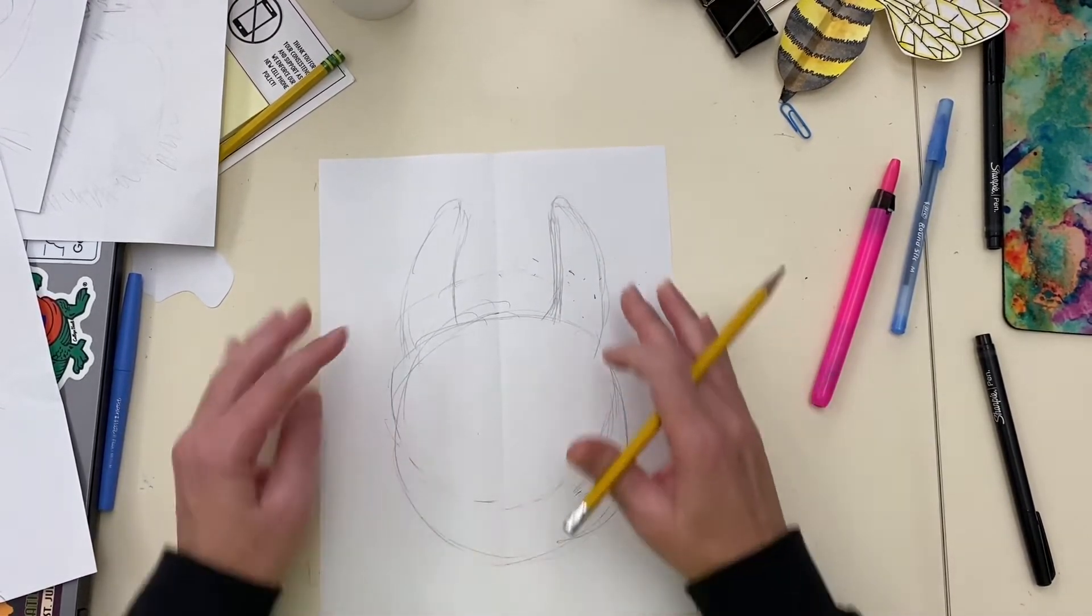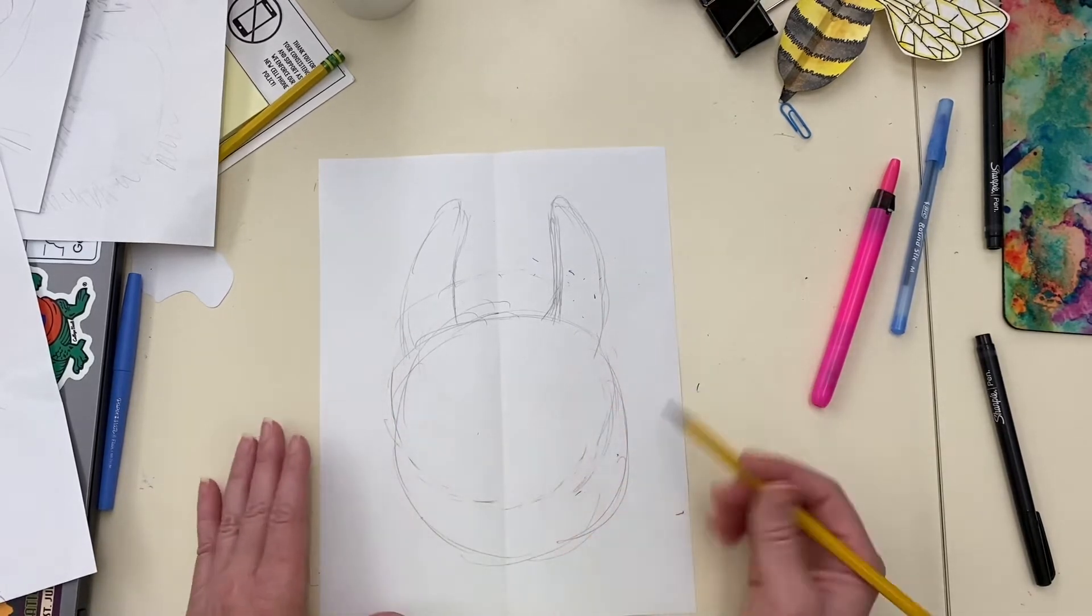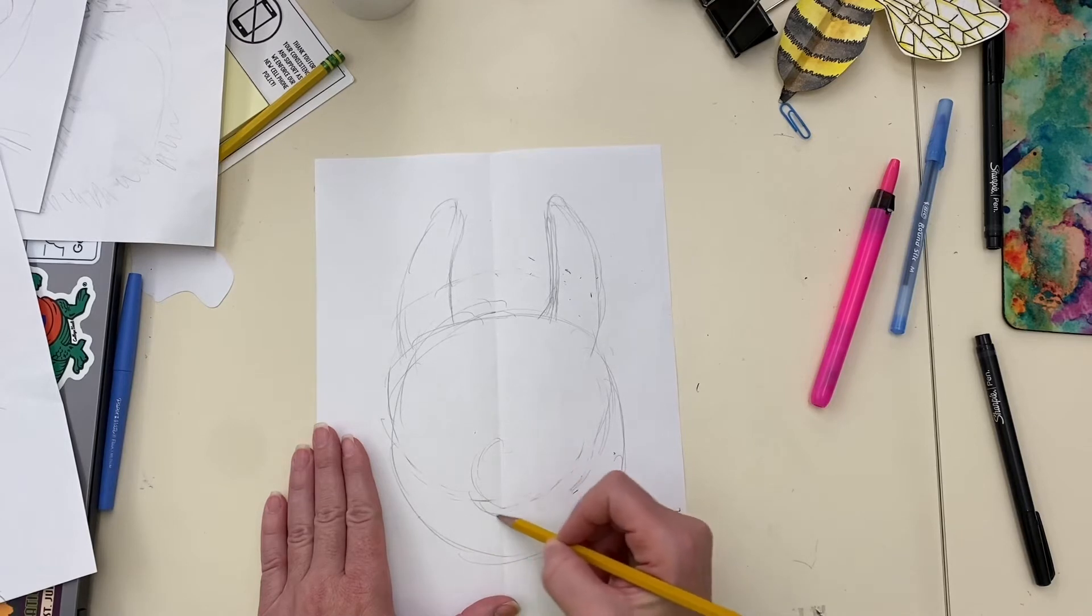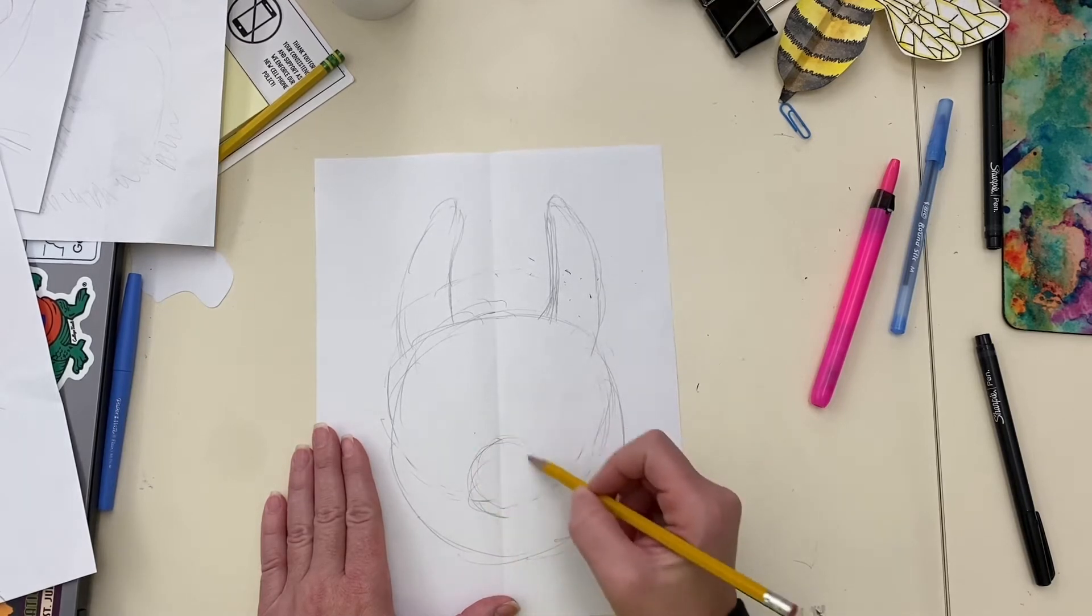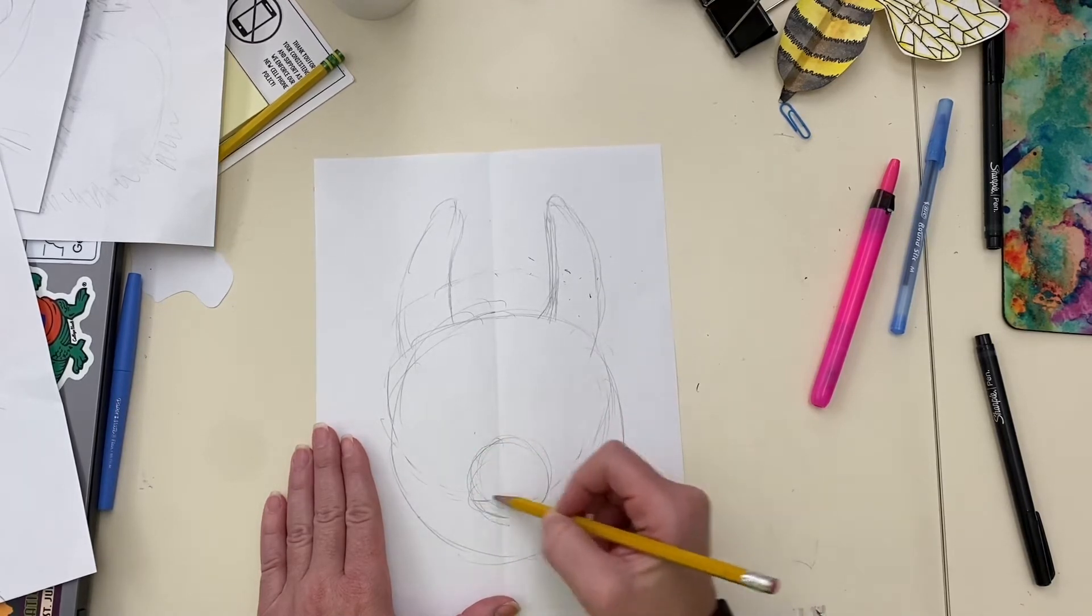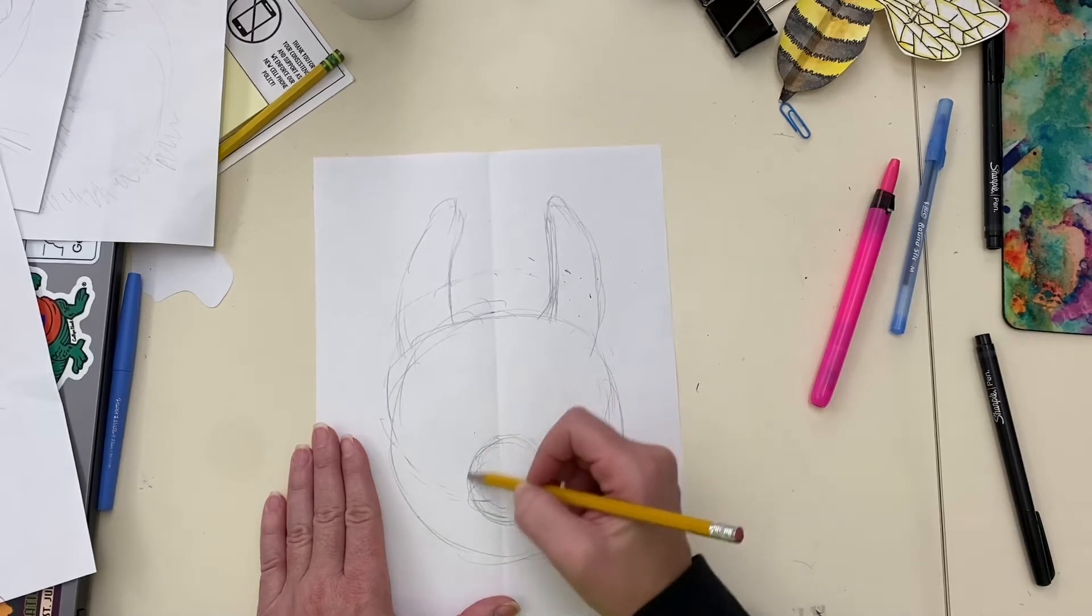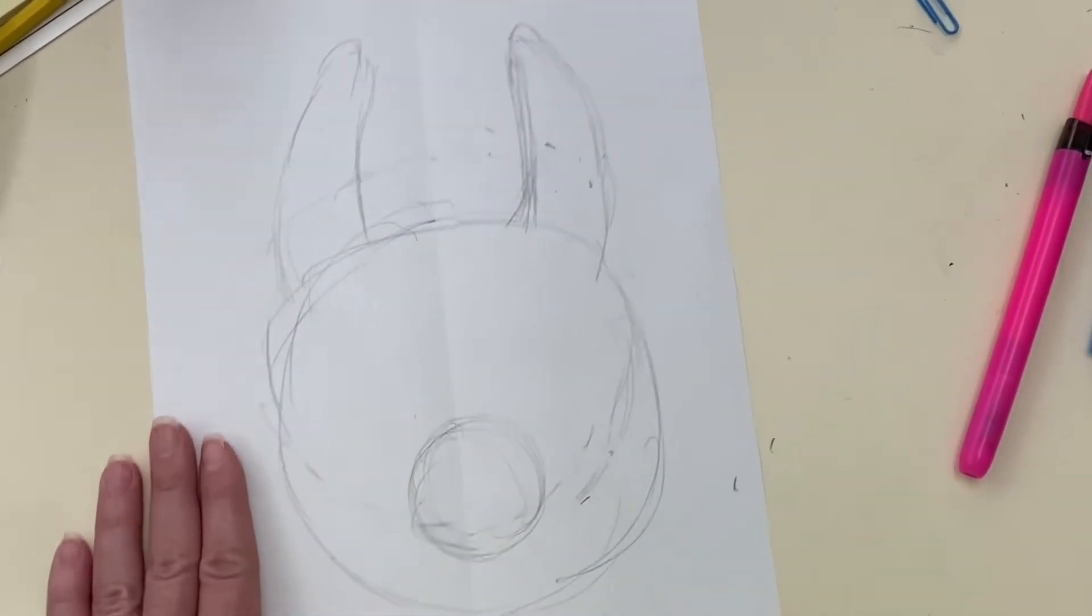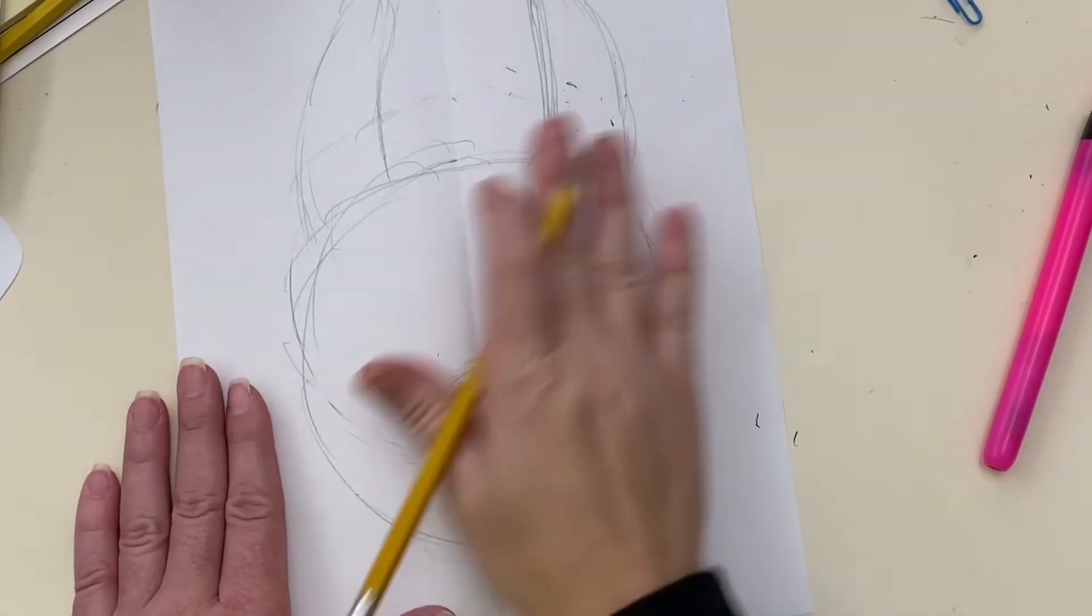All right. So I have the ears about the size of the head. I'm going to try to get the nose down. It's not a very big nose. And then I'm going to start getting more details. So again we're only worried about this side.